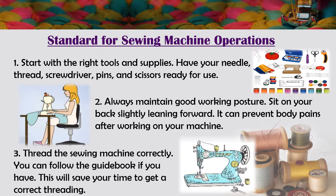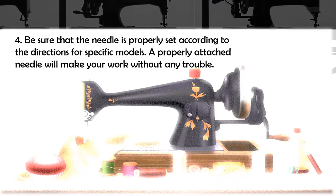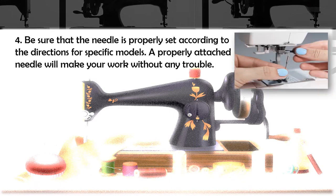Number three: thread the sewing machine correctly. You can follow the guidebook if you have one — this will save your time to get correct threading. Number four: be sure that the needle is properly set according to the directions for a specific model. A properly attached needle will make your work without any trouble.